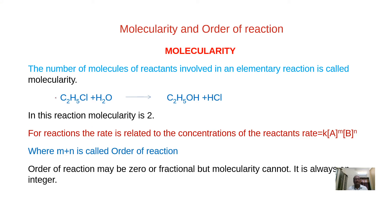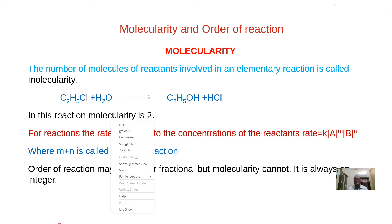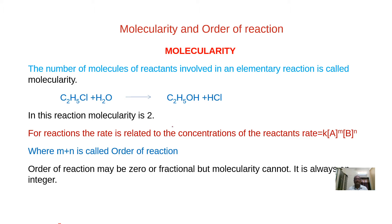For example, in the hydrolysis of alkyl halide: C₂H₅Cl undergoes hydrolysis to give C₂H₅OH and HCl. The molecularity of this elementary reaction is 2, because two reactants are involved — ethyl chloride and water. Molecularity is the number of reactant molecules involved in an elementary reaction.